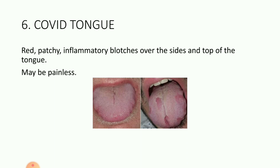And lastly, the COVID tongue. This COVID tongue is usually red, patchy, and inflammatory blotches which are present over the sides and top of the tongue most commonly. They might be painful or painless. It very closely resembles benign migratory glossitis, so you should always check it clinically and be sure of the diagnosis.